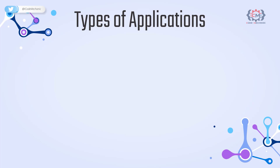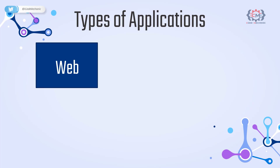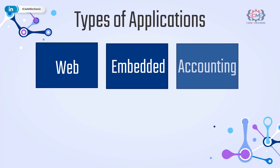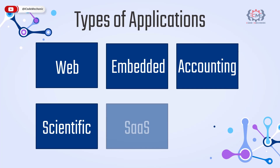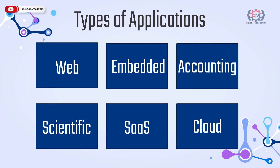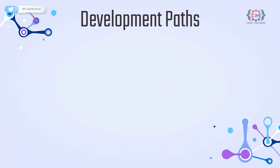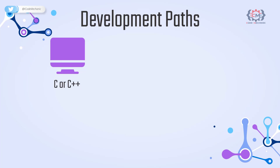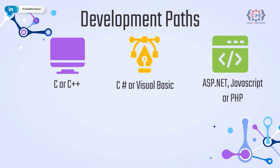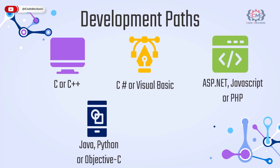When I say applications, it means a lot more than it used to — web applications, embedded applications, accounting applications, scientific applications, SaaS applications, cloud applications and more. Each of these requires a unique set of tools and skills. Typically, developers learn a specific development path: C or C++ for Unix or console applications, C# or Visual Basic .NET for Windows applications, ASP.NET, JavaScript or PHP for web development, Java, Python or Objective-C for mobile applications, and C++ for gaming.